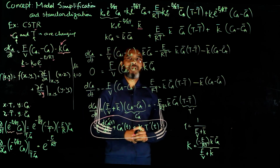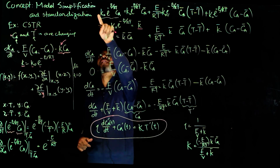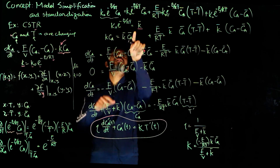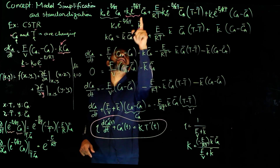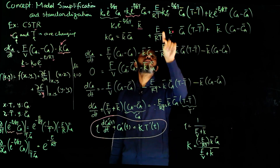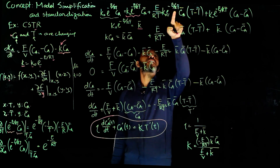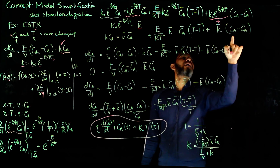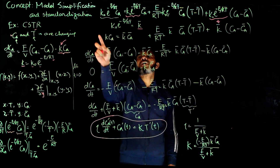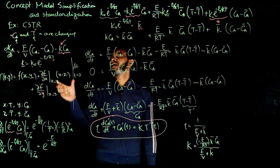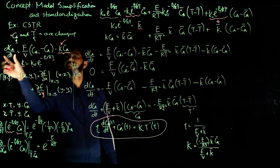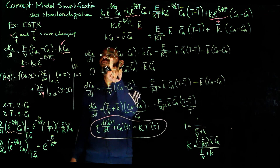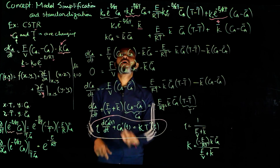Using the notation K-bar equals K-naught exponential negative E over RT for simplification, the linearized K times CA term becomes: K-bar times CA-bar plus E over RT-bar-squared times K-bar times CA-bar times (T minus T-bar) plus K-bar times (CA minus CA-bar). Now, substituting this linearized expression into the differential equation, the left-hand side is dCA over dt, and the F over V times (CI minus CA) term is unchanged.